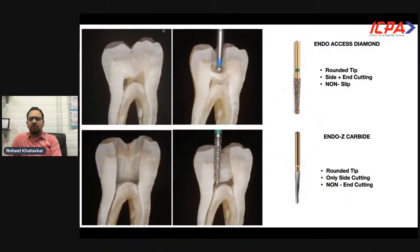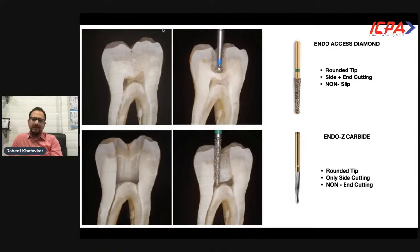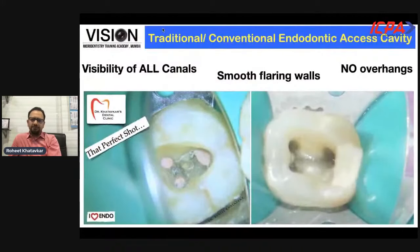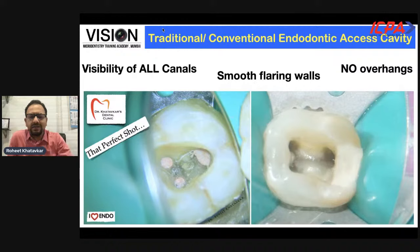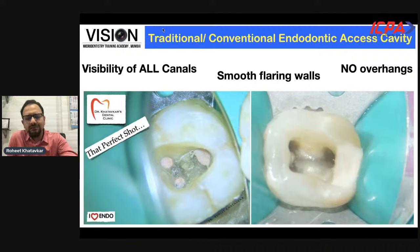Conventionally a round bur and a safe-ended diamond bur are recommended. Personally, I prefer an endo-access diamond bur with a rounded tip that allows both side and end cutting. The advantage is that it is non-slip like a round bur but also cuts on the sides. Once adequate depth is achieved, we switch to a safe-ended bur like an endozy or carbide bur. When doing conventional access cavity preparation, one of the most important criteria is to de-roof the entire pulp chamber with smooth flaring walls and good visibility of all canals — no overhangs — for a clean operating field during instrumentation.